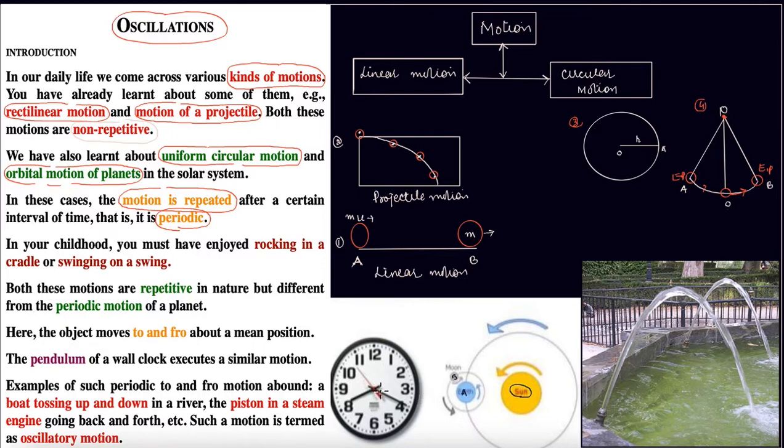If we talk about the moon around Earth, this is also periodic motion. After a fixed interval of time, the moon will be at point B again. Or if we talk about a clock, the second hand will be at the same position after 60 seconds. The minute hand, at location A, will return after 60 minutes.